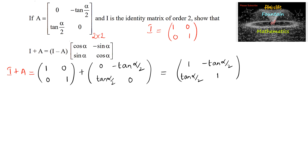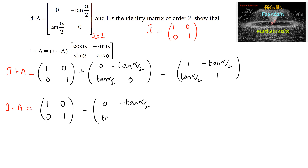Now I minus A is equal to [1, 0; 0, 1] minus A, which is [0, -tan(α/2); tan(α/2), 0], which equals [1, tan(α/2); -tan(α/2), 1].